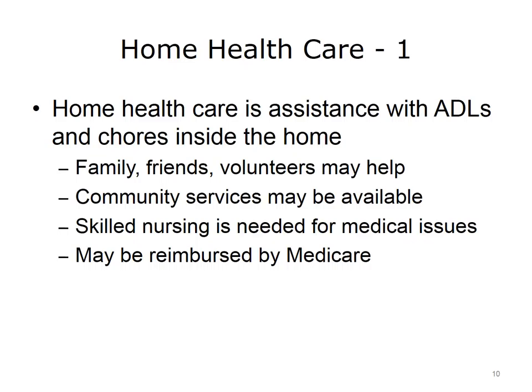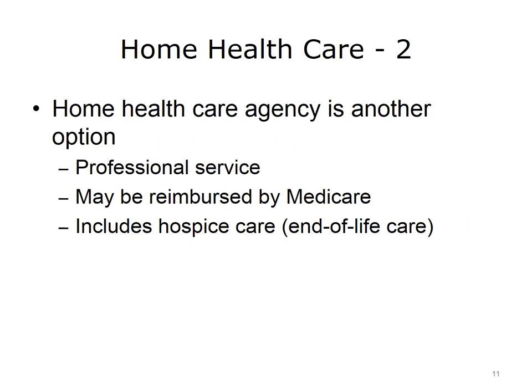There are various options for long-term care. The simplest is for people to receive help with activities of daily living and housework in their own homes, perhaps from family, friends, or volunteers. Some communities offer free or low-cost services such as health aides, personal care aides, medical equipment, home modifications, and respite care. Respite care refers to a brief period of assistance so that family caregivers can take a break. Individuals with health issues need home nursing care from a licensed health care worker — a registered nurse, a licensed practical nurse, or a licensed therapist. Medicare pays for this care in certain cases. People can also hire a professional home health care agency, some of which are reimbursed by Medicare. Costs vary based on region and the scope and frequency of care.